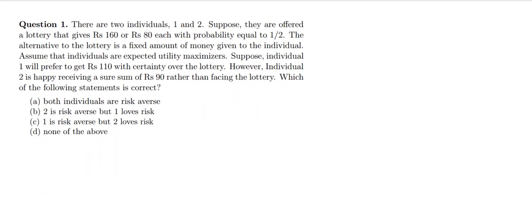In Question 1, there are two individuals — Individual 1 and Individual 2. They are offered a lottery that gives rupees 160 or rupees 80, each with probability equal to half. The alternative to the lottery is a fixed amount of money given to the individual. We assume that individuals are expected utility maximizers.